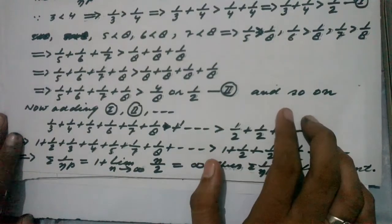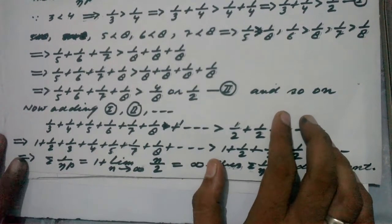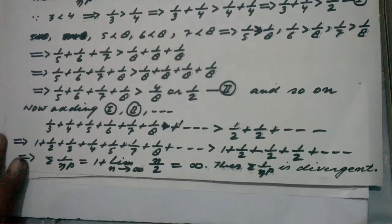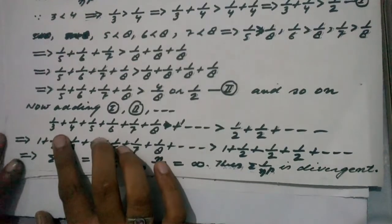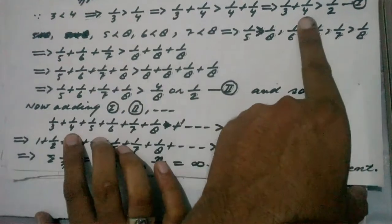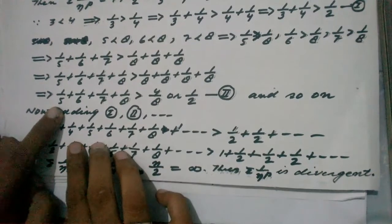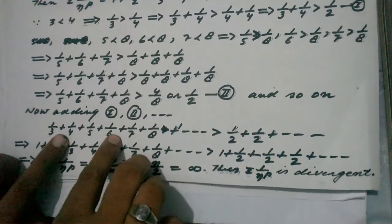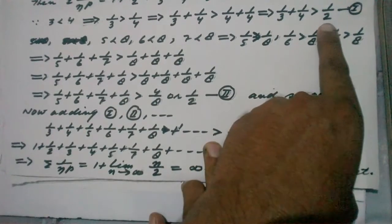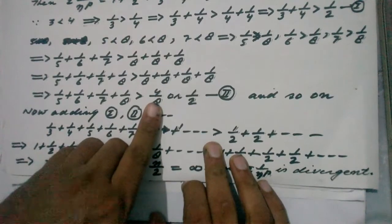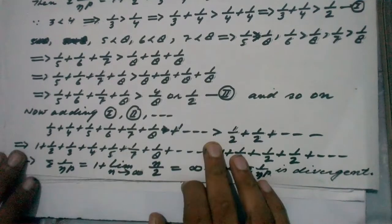We continue this process to obtain infinitely many such inequalities. Adding equations I, II, and all subsequent ones, the left-hand sides give 1/3 + 1/4 + 1/5 + 1/6 + ... to infinity, which is greater than 1/2 + 1/2 + ... to infinity.